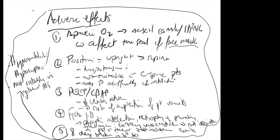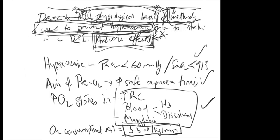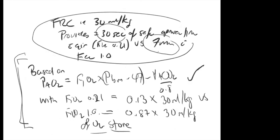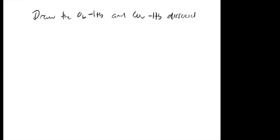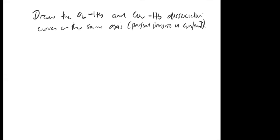A complete answer needs all of this. You need to balance time spent on physiological basis — definition, aims, formulas involved — with the methods and adverse effects. The next question: draw the O2Hb and CO2Hb dissociation curves on the same axis (partial pressure versus content) and compare and contrast these two curves.